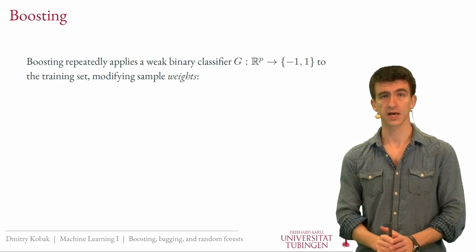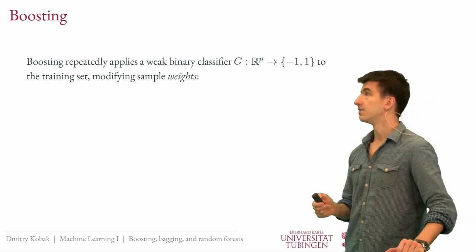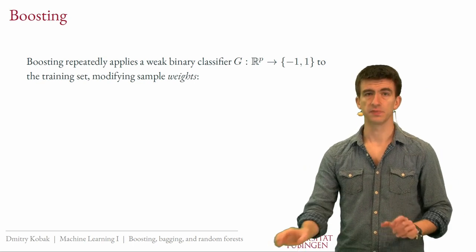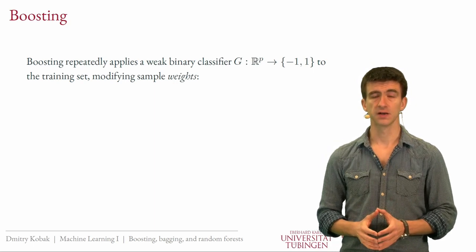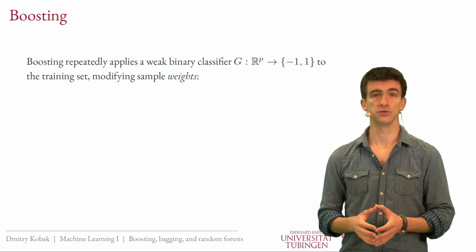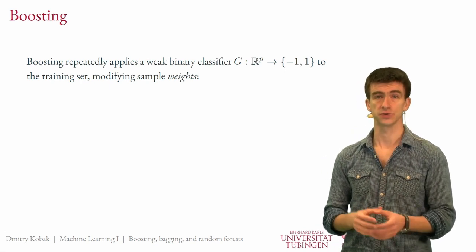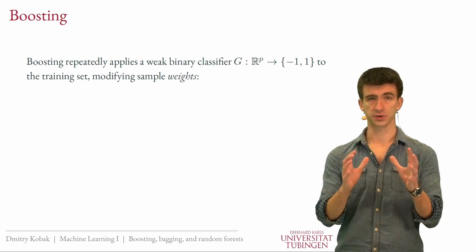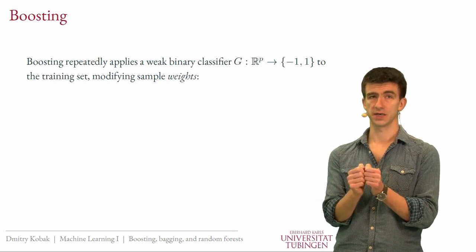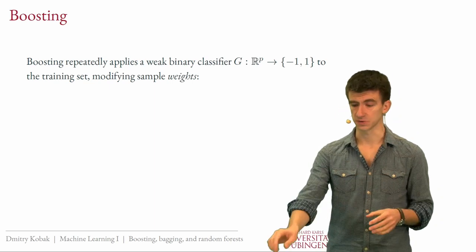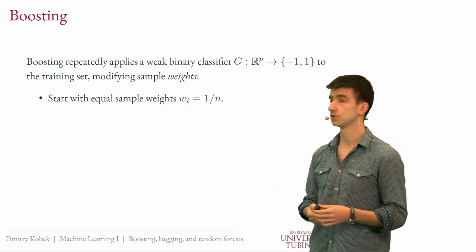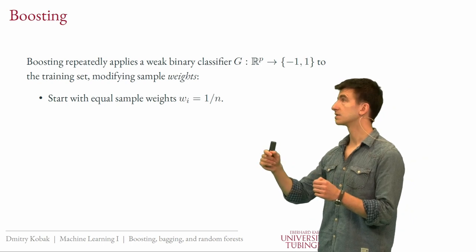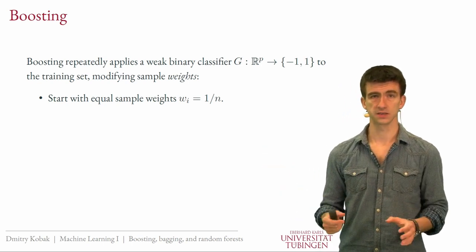Now we can start talking about boosting. Boosting is a method that repeatedly applies a classifier — usually a weak classifier. We'll use tree stumps as an example here. You take a tree stump, which is a very simple classifier with huge bias, and you repeatedly apply it to your training set, but every time you modify the training set a little bit by changing the weights of specific samples. You start with all samples having the same weight, which is the same as not having weights at all.